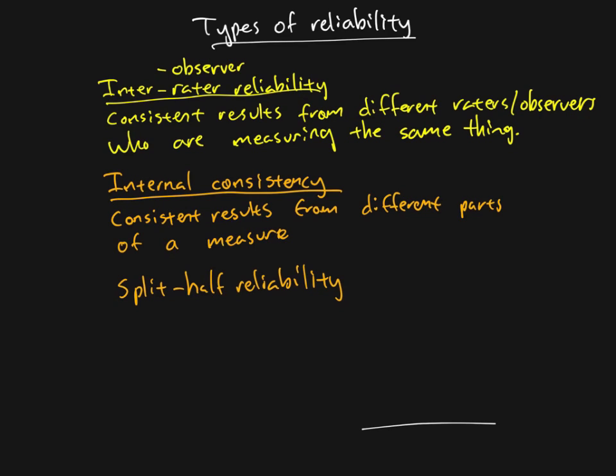Split-half is a simple approach — just dividing the test in half — but you might miss specific questions that aren't really measuring the same thing as everything else. A question that isn't getting at the construct you're measuring will tend to give very different results from all the other questions, but its effect might get drowned out when pooled together with all the other questions. So there are more sophisticated methods.